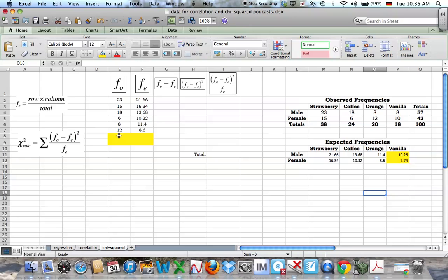Alright, so they are my expected frequencies finished. Of course you will need to do that for all of them. And then if I just replace them here, so I had males who like vanilla is 8 and females who like vanilla was 10.